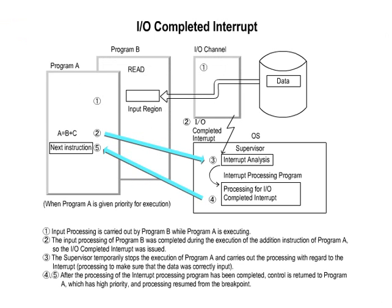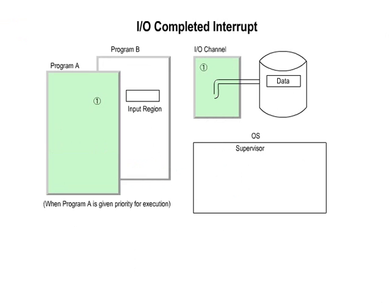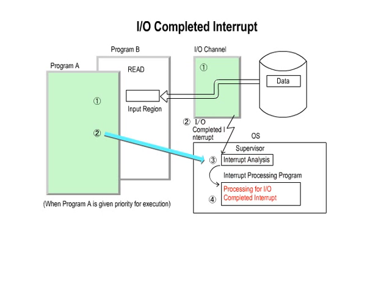1. External Interrupts. A. I/O Interrupt: This is an interrupt that notifies of the completion of an I/O operation, specially called an I/O completed interrupt, or a malfunction of the I/O device. It is notified together with information about a normal end or an abnormal end.